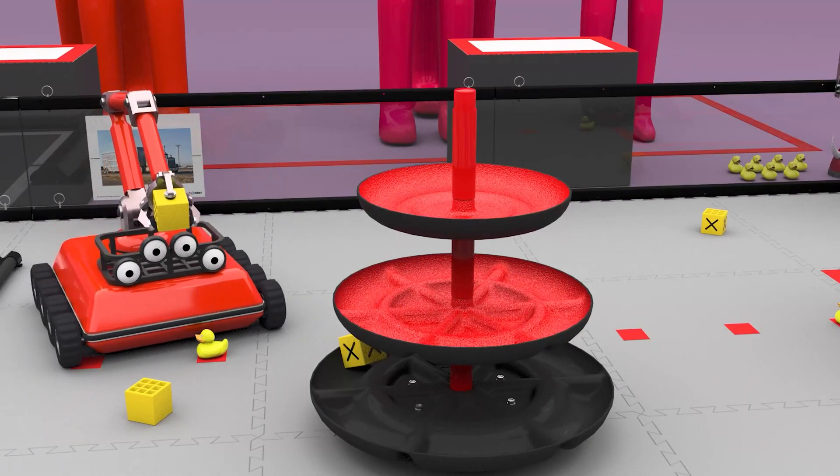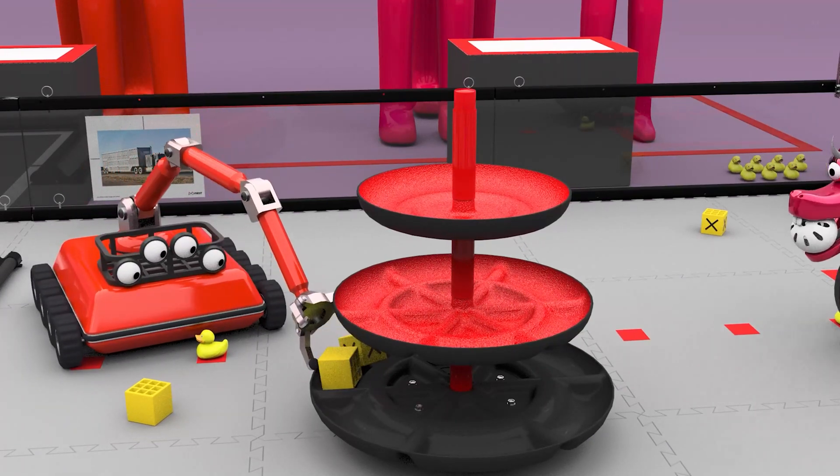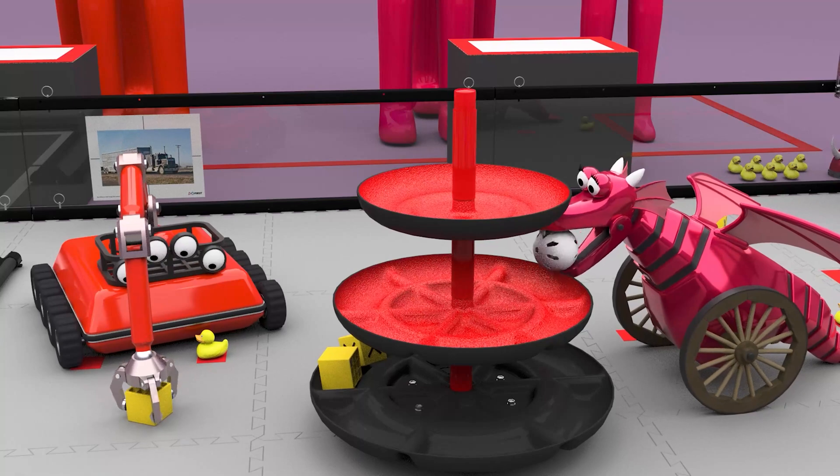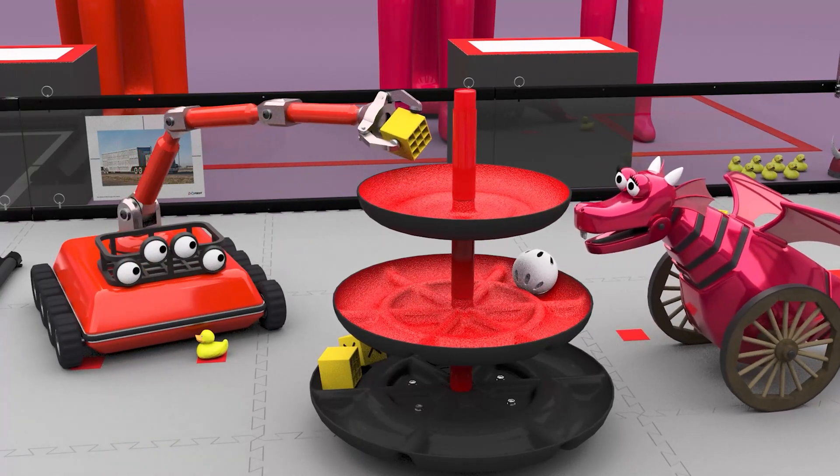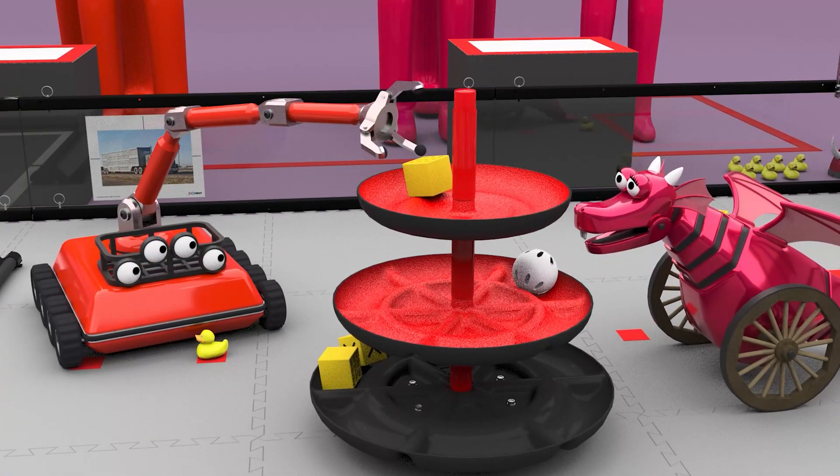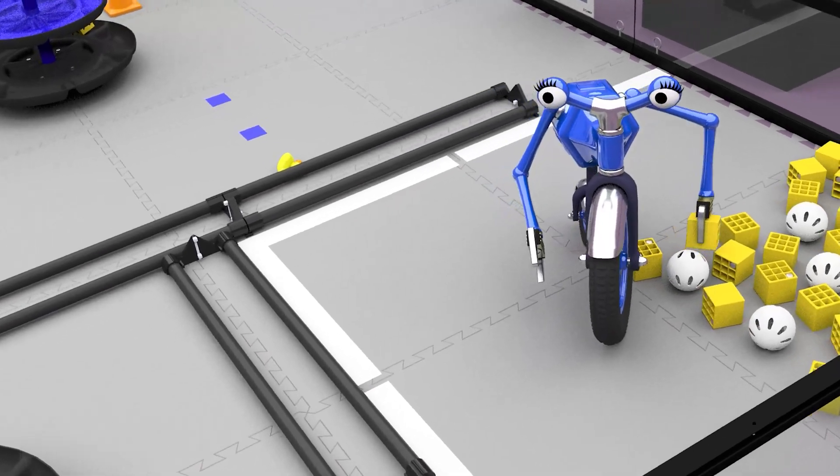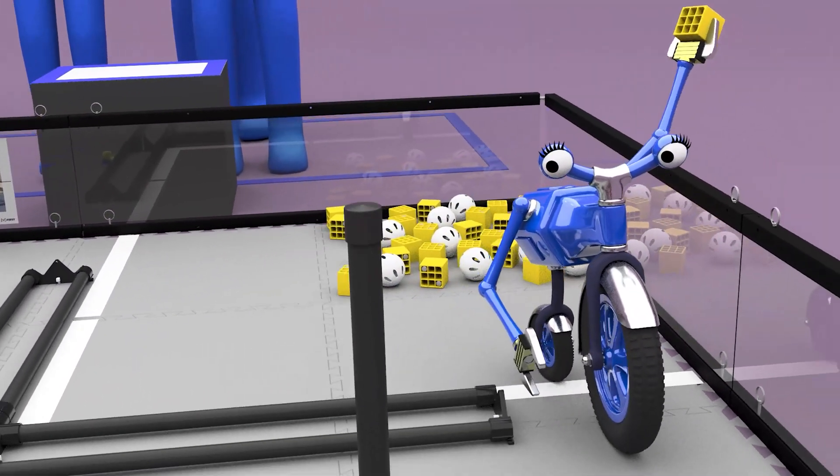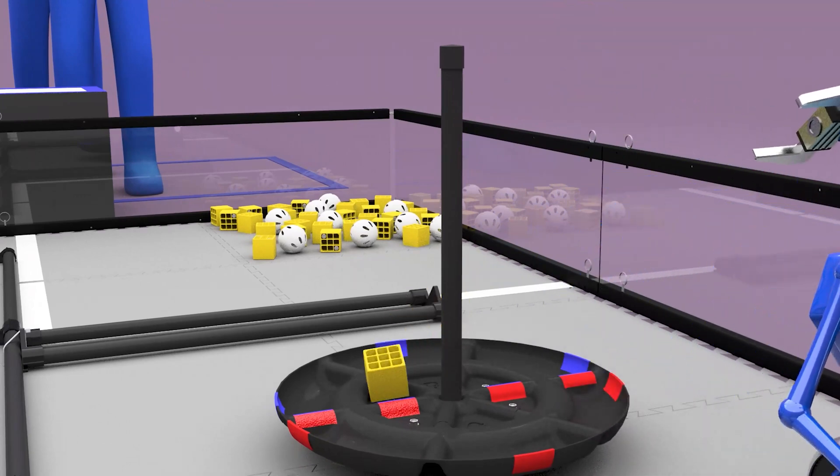Freight scored on an alliance's shipping hub will earn two points on level one, four points on level two, and six points on level three. Each freight scored on the alliance's side of the shared shipping hub will score four points for their alliance.